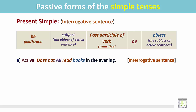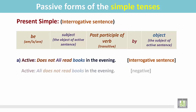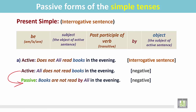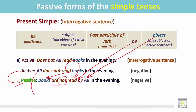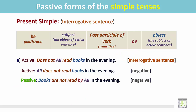'Does not Ali read books in the evening?' This is an interrogative sentence in the negative. We make it a statement: 'Ali does not read books in the evening.' Now it is in the negative form as a statement. After that we make this active sentence into passive. The object is 'books' — in the passive, books becomes the subject. It is plural, so we use 'are not'. The past participle of 'read' has the same spelling but is pronounced 'read'. Then we add 'by Ali'. Result: 'Books are not read by Ali in the evening.'